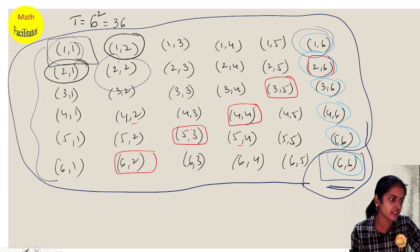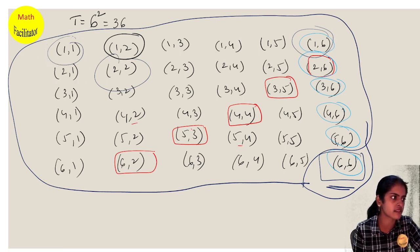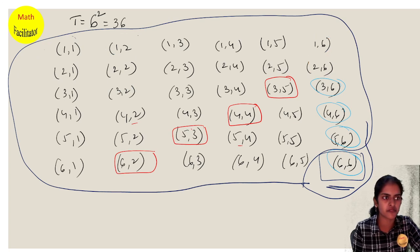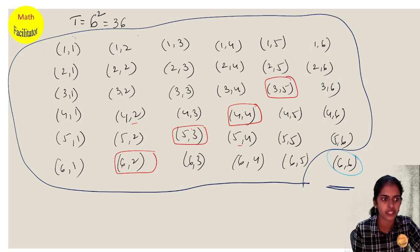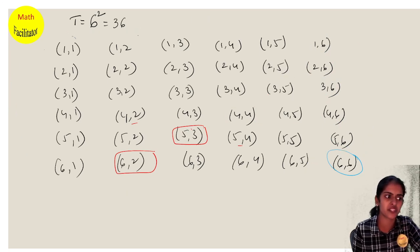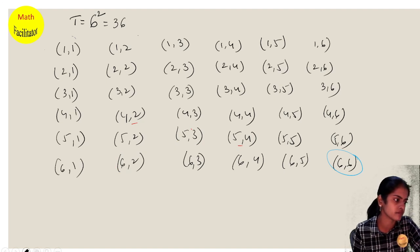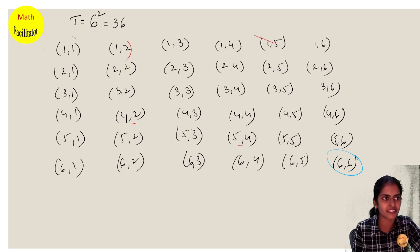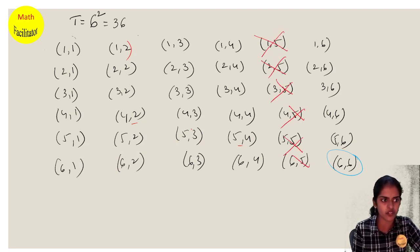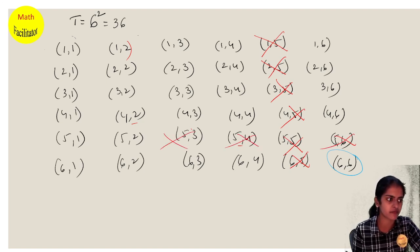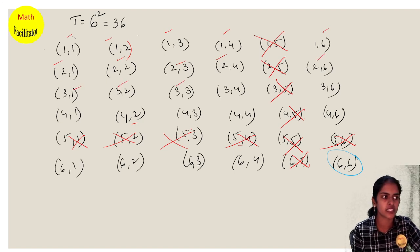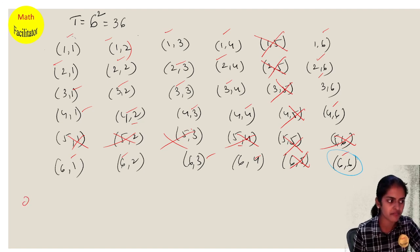See here, five is appearing. Let's erase this. These are all the outcomes we discussed in the previous video. We don't want five either time, so wherever five appears, we cancel it. How many are remaining? Counting: one, two, three... 25 outcomes. So 25 outcomes are there where five is not there at all.